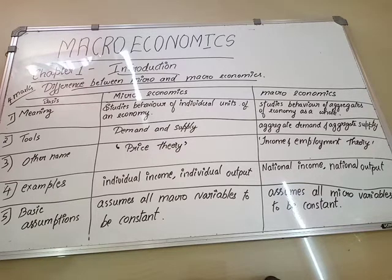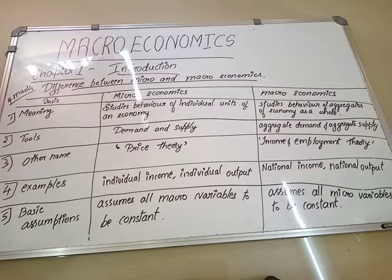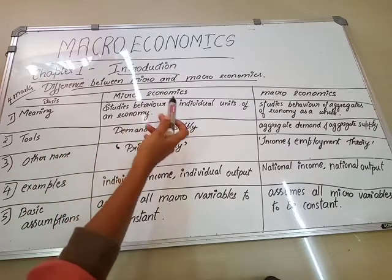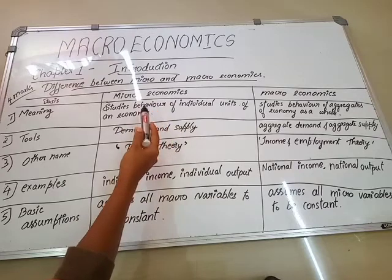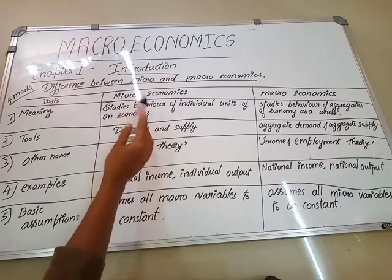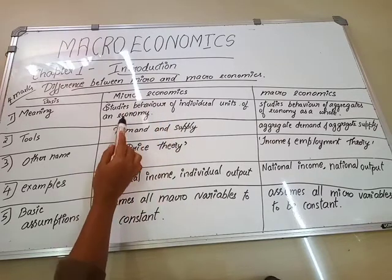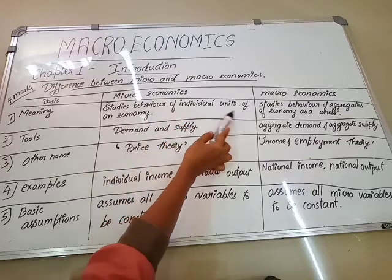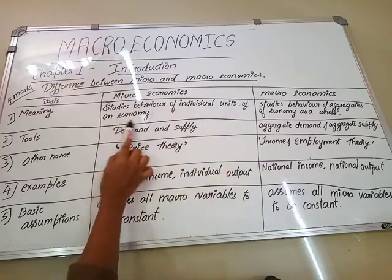That is the basic understanding of micro and macroeconomics. Now we shall see one by one what are the differences. The first difference — the basis is meaning. Microeconomics is that branch of economics which studies the behavior of individual units of an economy.